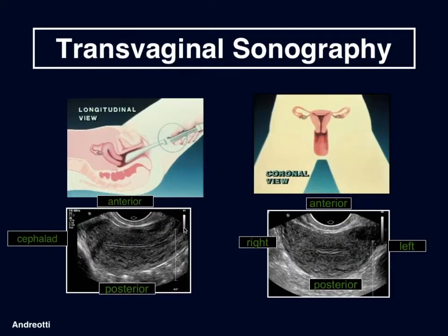When we place the probe within the vagina, we can see a sagittal view of the uterus — cephalad on this side, posterior below the uterus, anterior above the uterus. In the transverse view, which is actually the coronal view of the pelvis, right is on this side, left is on this side. As we would see imaging with any modality, anterior usually on top, posterior below, as long as the uterus has its fundus pointing anteriorly.